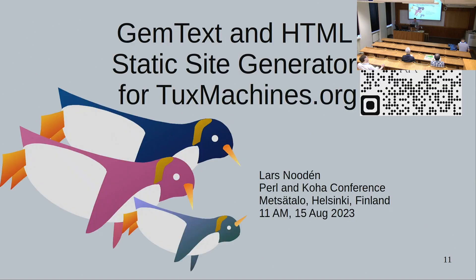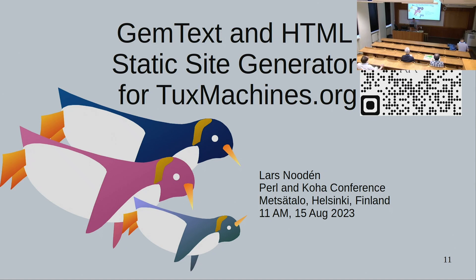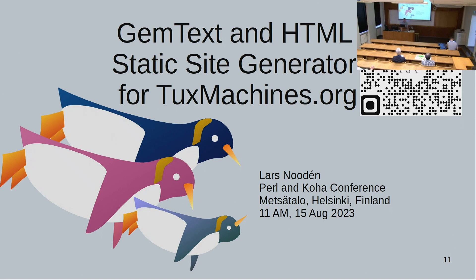From the Gemini part of the site, TuxMachines is ranking at the top in Lupa. They got to about 6,000 non-bot visitors per day back in June; the last week it's been up to about seven thousand, gradually growing over time. Web visitors are about 42,000 per day. He thanks the organizers, attendees, the editors Suzanne, Roy, and Rianne, and especially the Perl Monks community, which provided a great deal of help.